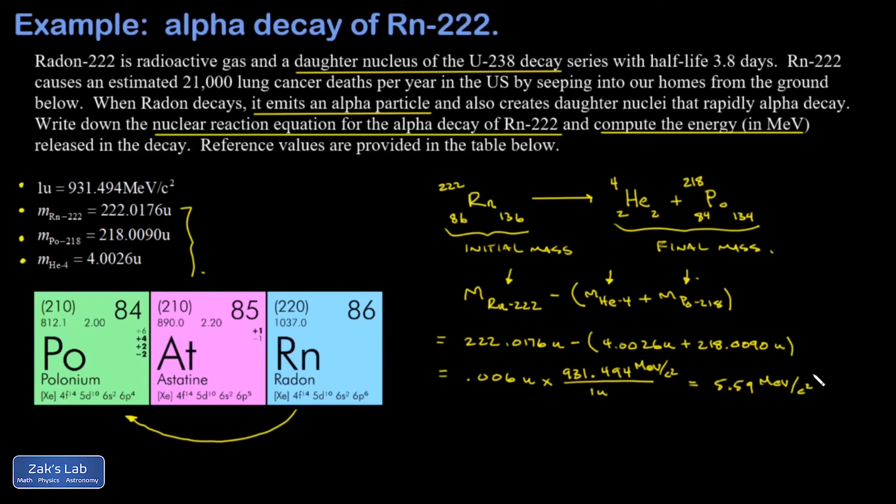I think most nuclear physicists would just ignore the c squared and say okay, 5.59 MeV was released in the reaction. But to be totally complete about this, what we're doing is finding the energy equivalent of that mass that disappeared. For this we use E equals mc squared. Our mass was 5.59 MeV per c squared and we multiply by c squared.